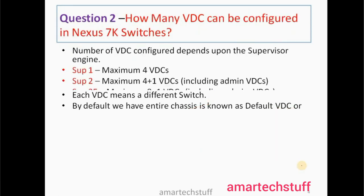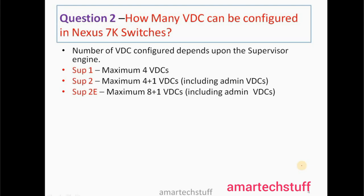Question number two: How many VDCs can be configured on a Nexus 7K? The number of VDCs depends on the supervisor engine in your chassis. With Supervisor 1, a maximum of 4 VDCs can be created. With Supervisor 2, a maximum of 4 plus 1 VDCs can be created — that one extra being the admin VDC. With Supervisor 2E, a maximum of 8 plus 1 VDCs can be created. Remember these numbers as this is frequently asked.